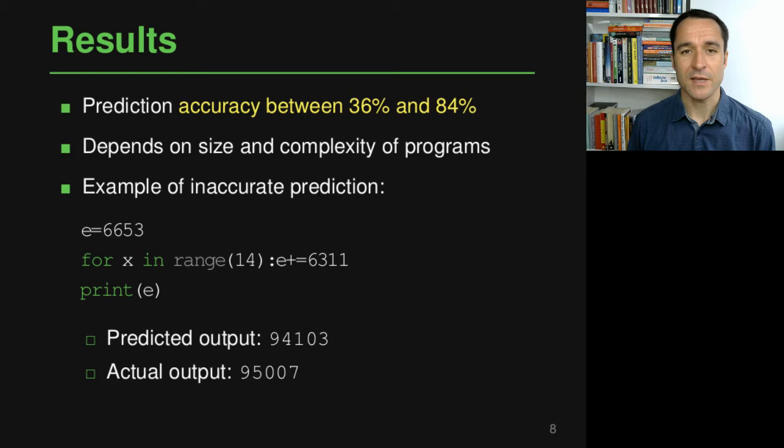Now the way the actual model works is the same as what we've seen before. The input sequence is given to the encoder RNN, which produces a context vector, which is given to the decoder RNN, which then produces the output sequence. I'm not going to repeat this again for this particular application, but instead let's have a look directly at the results of this approach.